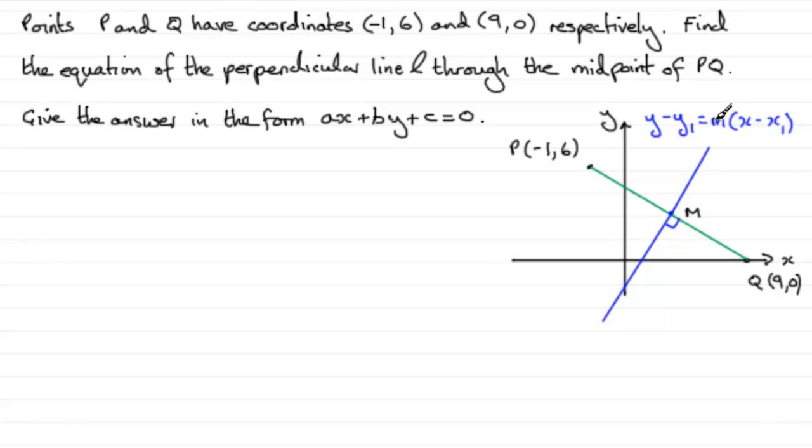And M here is the gradient of this line, and we can get that quite easily by working out the gradient of this line and then using the perpendicular gradient rule. Remember the product of the two gradients comes to negative 1.